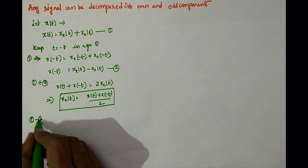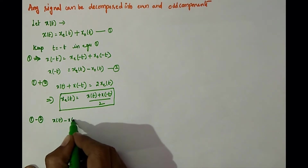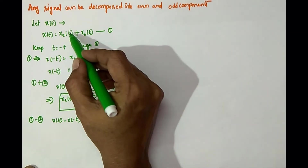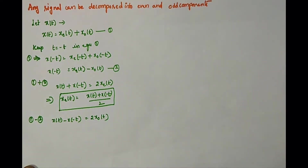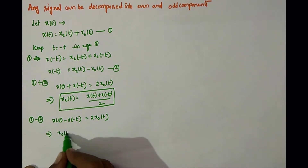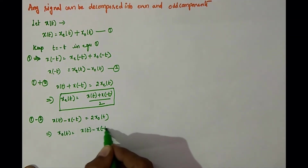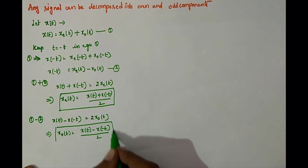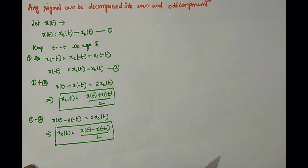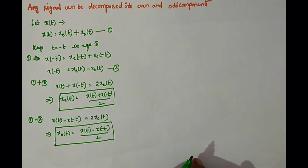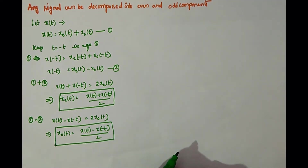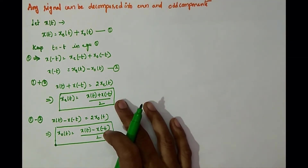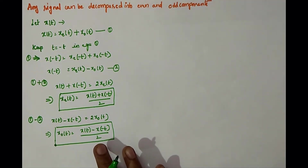Similarly, doing equation 1 minus equation 2: x of t minus x of minus t gives 2 times x-odd of t, since the even components cancel. So the odd component x-odd of t equals x of t minus x of minus t divided by 2. These two equations are used to find the even and odd components of any given signal.